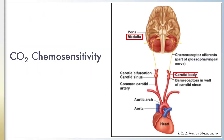Carbon dioxide levels are sensed by chemoreceptors located peripherally in the carotid bodies near the carotid sinus, and centrally at or near the ventral surface of the medulla oblongata in the brainstem. The carotid bodies are specialized cells in direct contact with arterial blood that communicate with afferent neurons projecting to the respiratory control regions in the medulla.